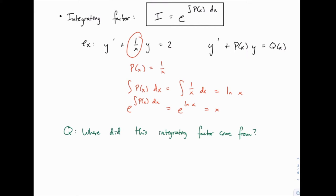So for example, in the example we worked out earlier, we had y prime plus 1 over x times y equals 2. So we selected 1 over x as p of x. And then when we integrate that, we get the natural log function. And then the integrating factor is e raised to the power of that integral. So e raised to the power of natural log of x, which just simplifies to x.